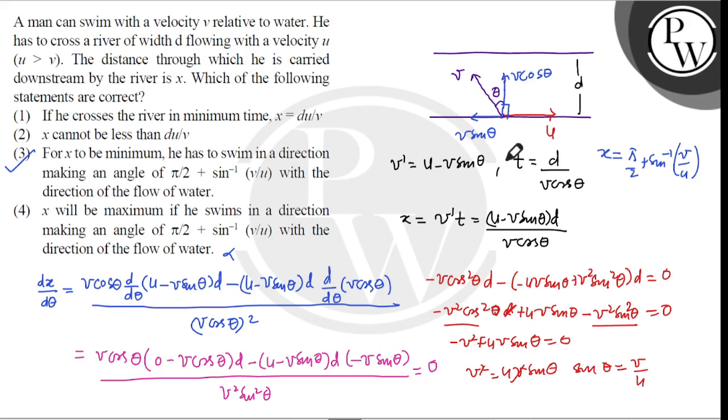We also know that time T equals D upon V. So if we cross the river in minimum time, that happens when theta equals zero and T equals D upon V. In this case, the X will be,